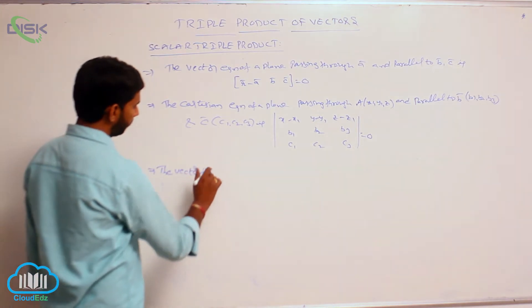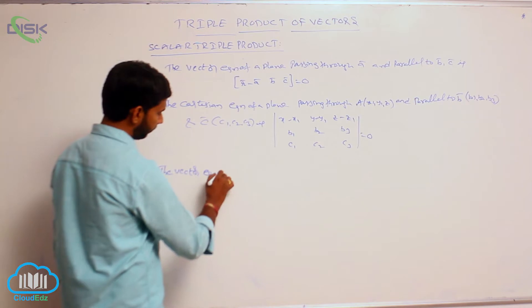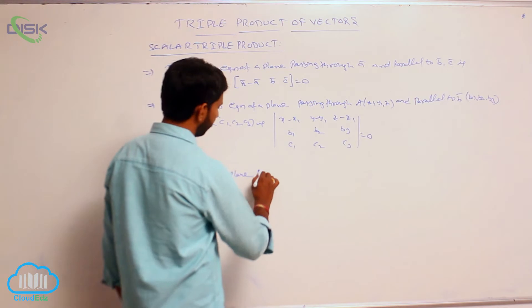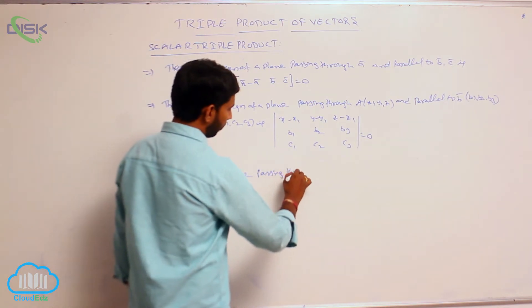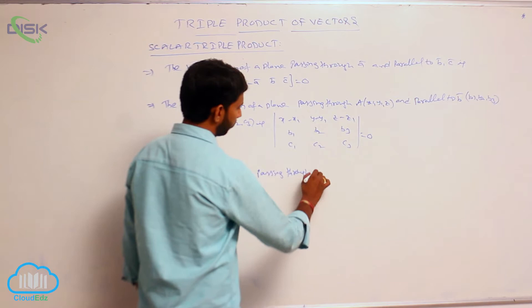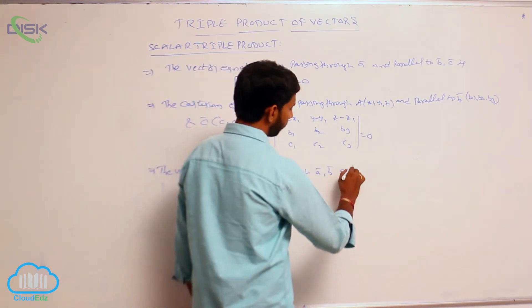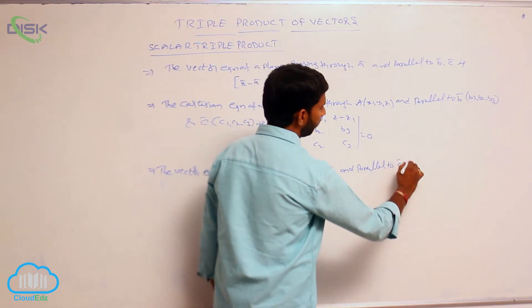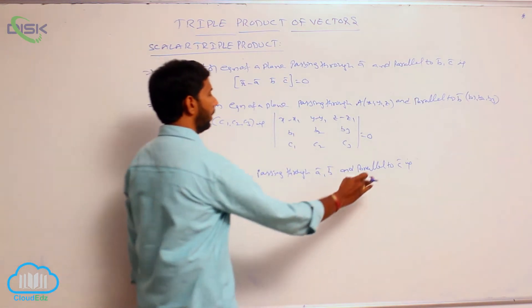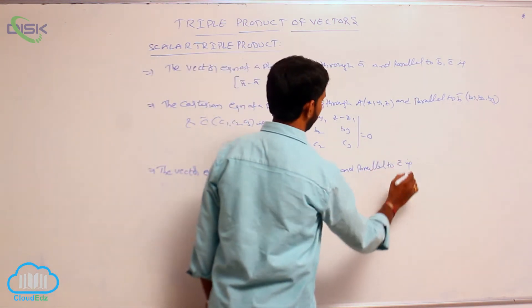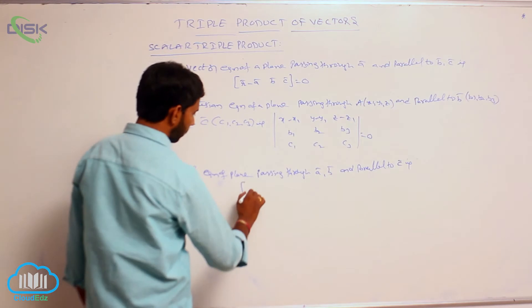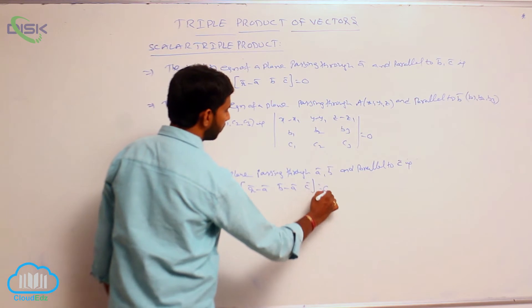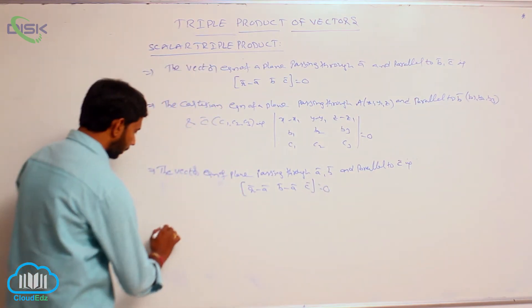The vector equation of a plane passing through A̅ and B̅ and parallel to C̅ is: box of (R̅ minus A̅, B̅ minus A̅, C̅) is equal to 0.